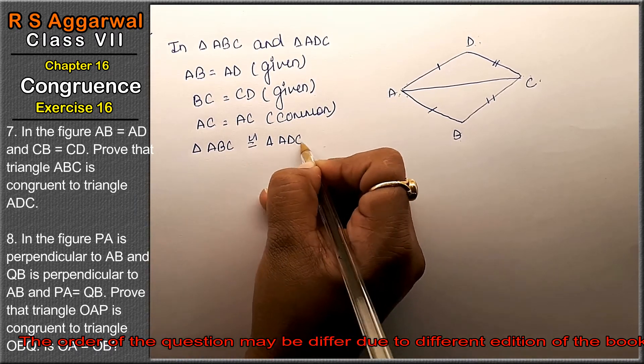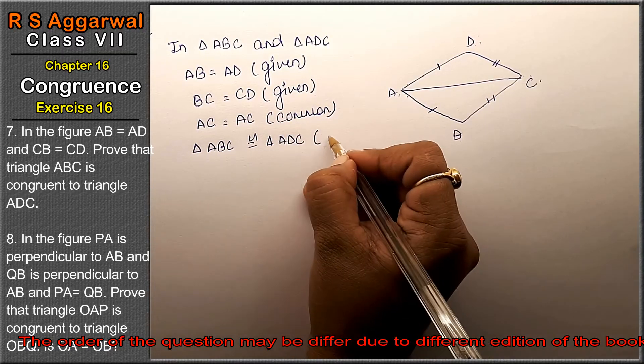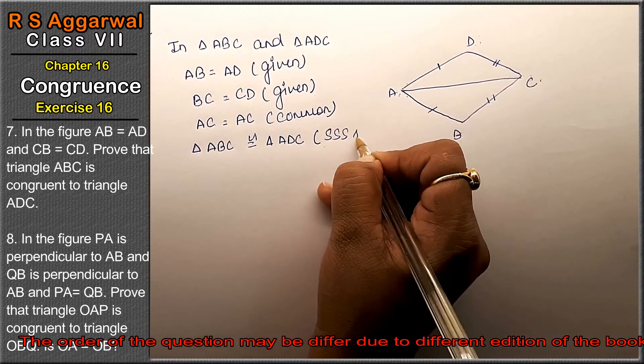Triangle ABC is congruent to triangle ADC. Which rule? Three sides are equal, so SSS rule.